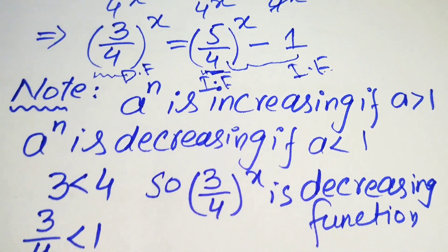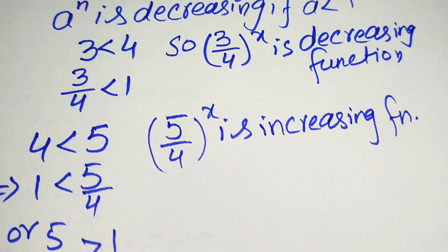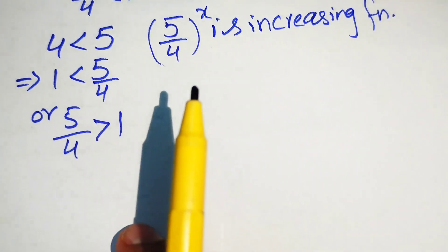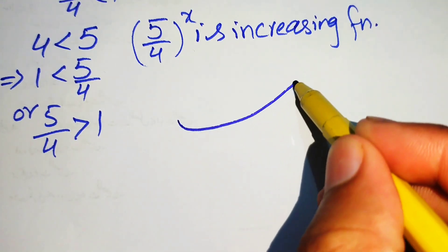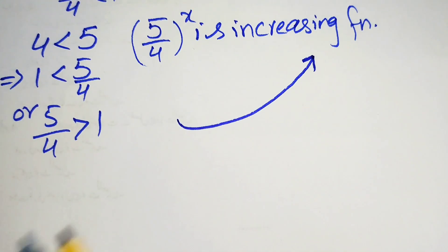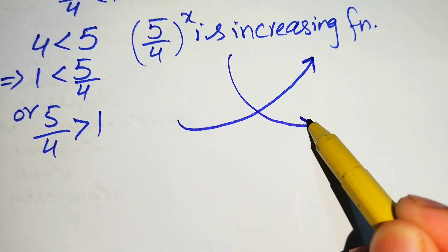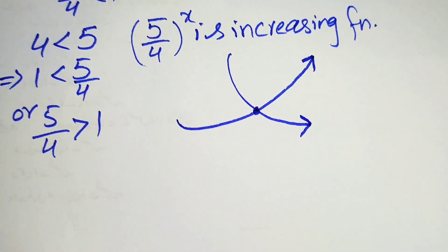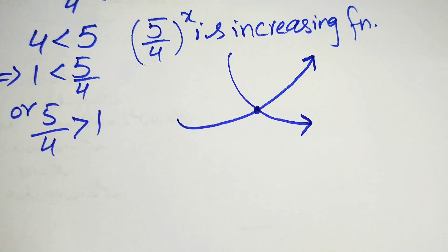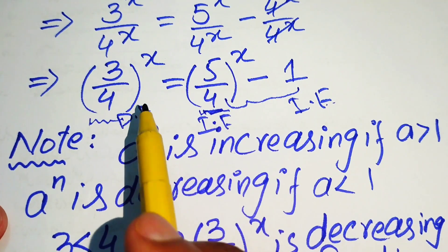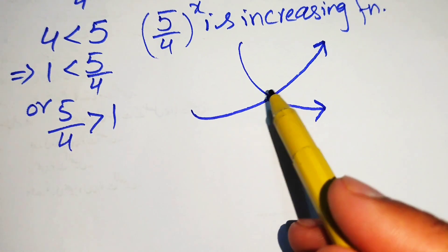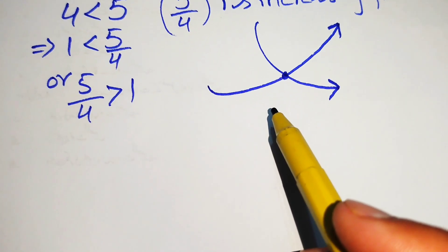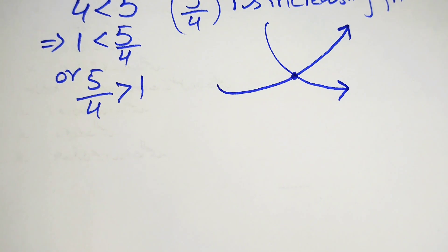Let's view the representation of these increasing and decreasing functions. An increasing function has an upward shape, while a decreasing function slopes downward. Since the left hand side is a decreasing function and the right hand side is an increasing function, they will intersect at exactly one point, which is the solution to this problem. We find this intersection point by inspection.